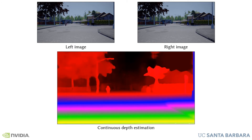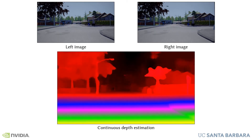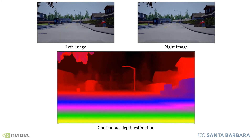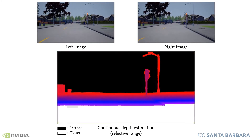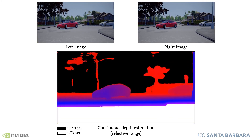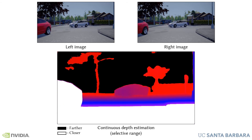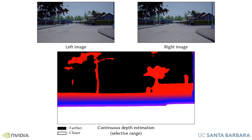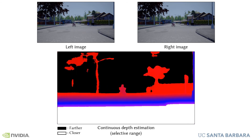By3D can also estimate a traditional depth map, achieving competitive results on standard benchmarks. Unlike previous methods, when a full depth map is too expensive, By3D can allocate all the available computation to a specific range of interest, while properly identifying out-of-range objects.